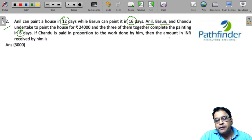So here we are told that Anil can paint the house in 12 days all alone, Barun will take 16 days, but we don't know how much time Chandu will take. But we know for sure that the three of them together are able to paint it in 6 days.